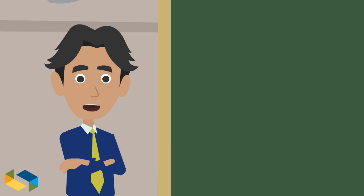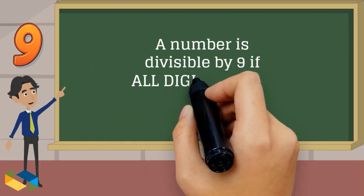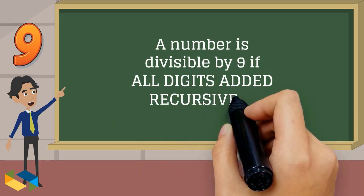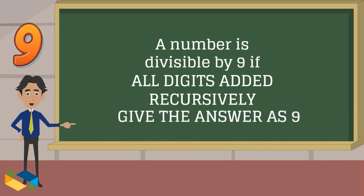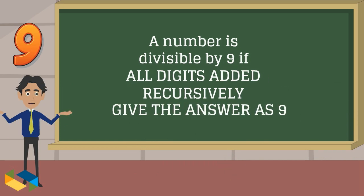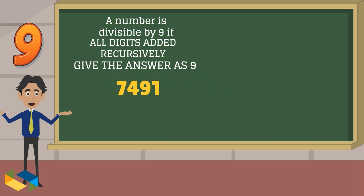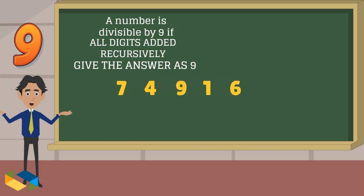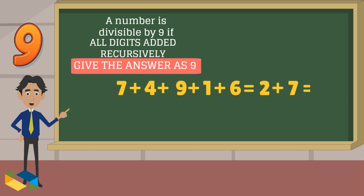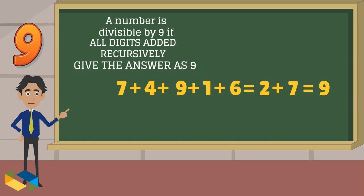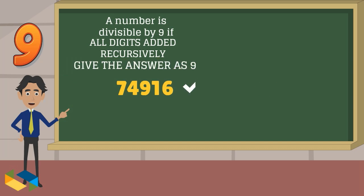The divisibility rule for 9 is interesting: you keep adding digits recursively, and if you get 9 in the end, the number is divisible by 9. Take the number 74,916 — add all its digits to get 27, then add 2 and 7 to get 9. So 74,916 is divisible by 9.